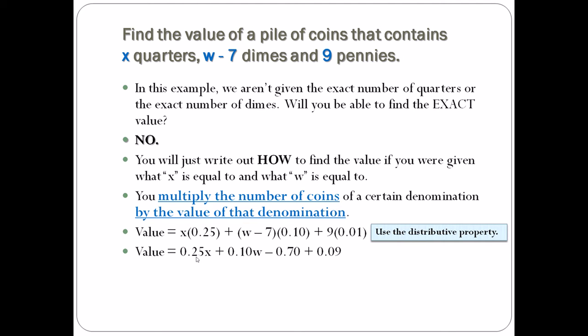Then we did 10 cents times w—the number goes before the letter. And then we have negative 7 or take away 7 times 10 cents, which is take away 70 cents. And then we had those nine pennies—that's nine cents. You're still not done.